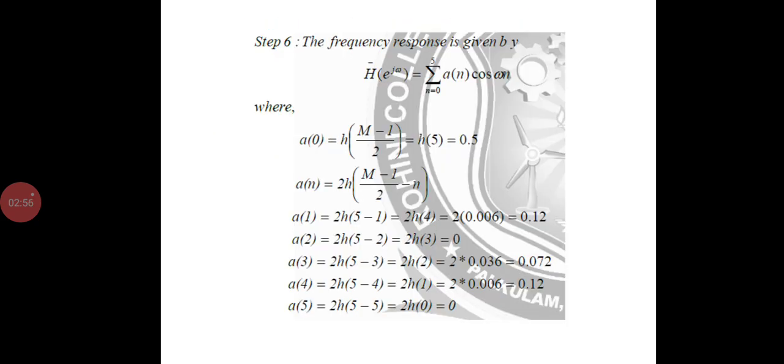The sixth step: the frequency response is given by H'(e^(jω)) equals summation from n=0 to 5 of a(n)*cos(ωn). We have found all the values and calculate them.